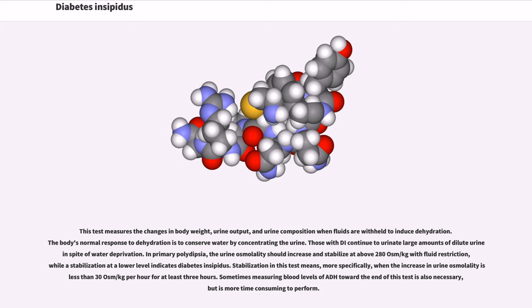In primary polydipsia, the urine osmolality should increase and stabilize at above 280 osm/kg with fluid restriction, while a stabilization at a lower level indicates diabetes insipidus. Stabilization in this test means, more specifically, when the increase in urine osmolality is less than 30 osm/kg per hour for at least three hours.